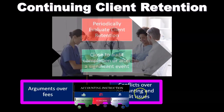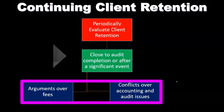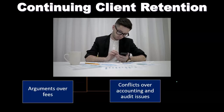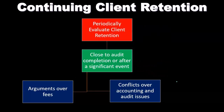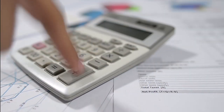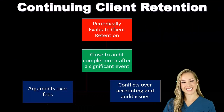Triggers for reevaluation include arguments over fees or conflicts over accounting and audit issues. If we note an adjustment that doesn't align with generally accepted accounting principles and the client refuses to make it, that's worth reassessing. It doesn't necessarily mean the client is wrong, but we want to make sure everything is running smoothly and that the situation isn't an indication of something deeper.